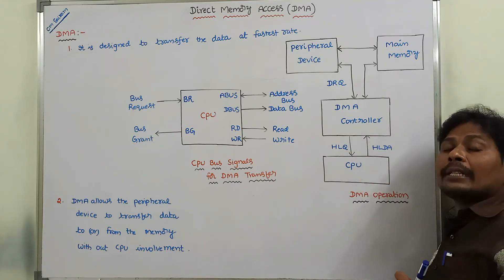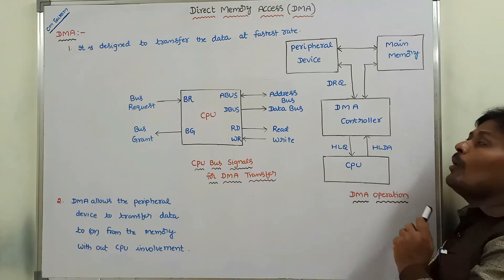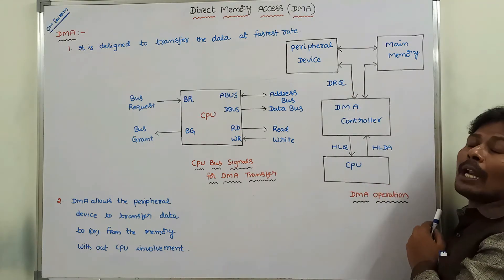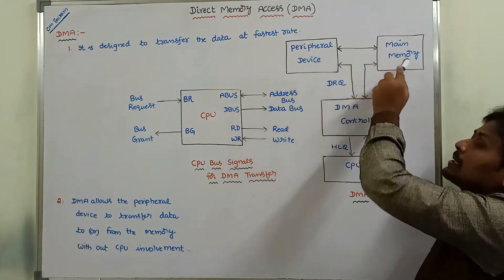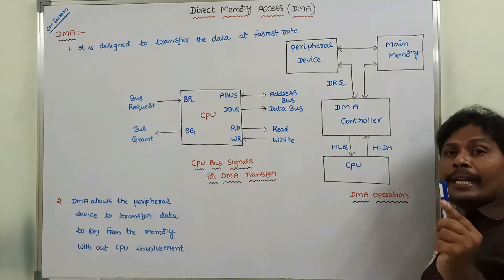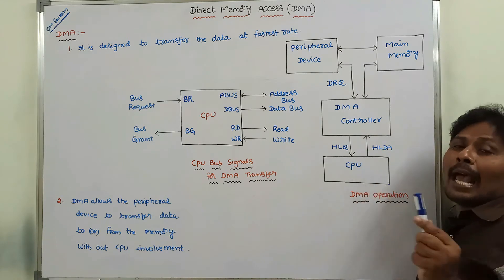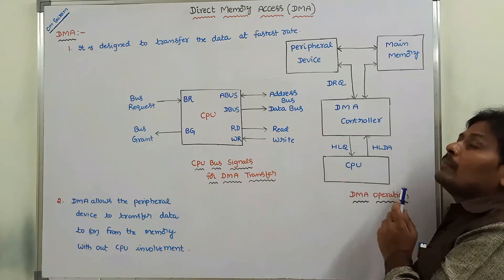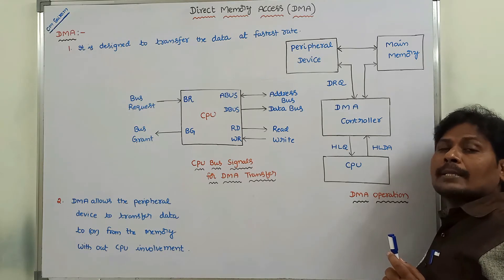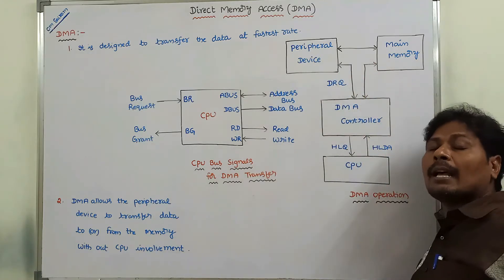Then the CPU sends the hold acknowledgement signal to the DMA controller. Now, the DMA controller can act as a master and takes control over the memory buses from the CPU, and can manage the data transfer operation between the peripheral devices and main memory. During DMA transfer operation, the CPU is in an idle position and has no control over the memory buses.